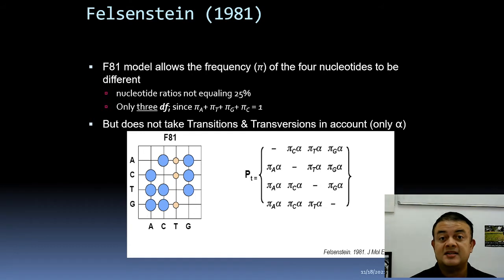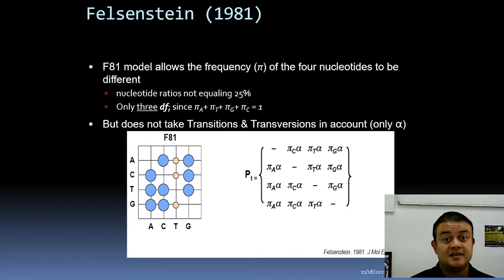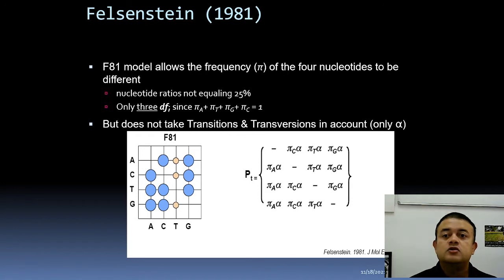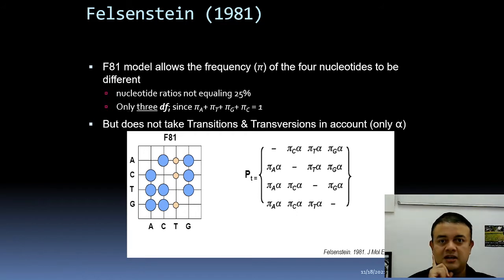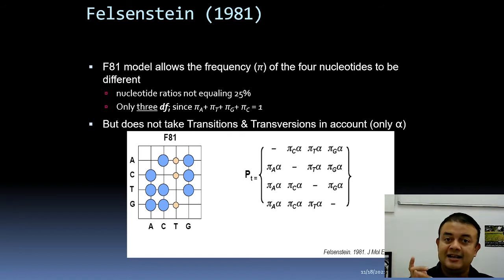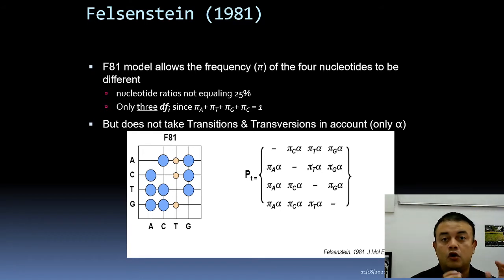The next model is Felsenstein's 1981 model, F81, by Joe Felsenstein of the University of Washington — a very renowned evolutionary biologist. His model allows the frequency of the four nucleotides to be different. They are not just 25% each; they can have any value, but must total to one.